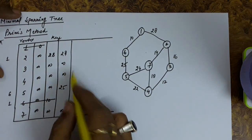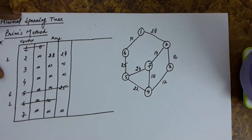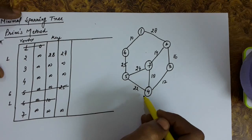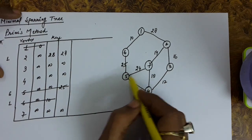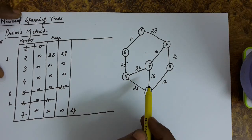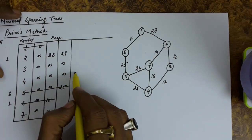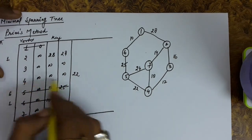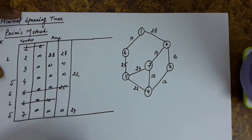We remain with 5 vertices. The shortest key is 25, so we delete vertex 5. From vertex 5, the connections are 6 (already deleted), 7 with cost 24, and 4 with cost 22. We update the key of 7 as 24 and key of 4 as 22. Vertices 7 and 4 have been explored from 5, so the predecessor of both 4 and 7 is set to 5.